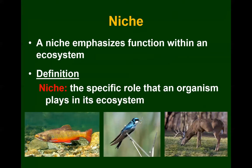Here's another definition: niche. A niche emphasizes the function of an organism within an ecosystem. The definition of a niche is the specific role that an organism plays in its ecosystem. For example, an insectivore — something that eats insects — that's a niche. A herbivore, a grazer or browser — those are niches. Whatever your function is in the ecosystem, that's your niche.